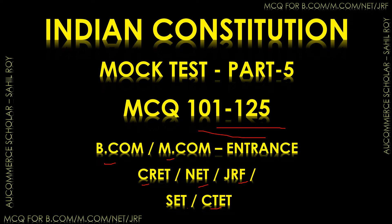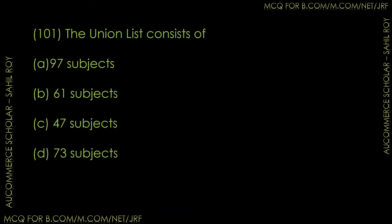Let's begin with question number 101. The Union List consists of how many subjects? First option: 97 subjects. Second option: 61 subjects. Third option: 47 subjects. Fourth option: 73 subjects. The correct answer is the Union List consists of 97 subjects.